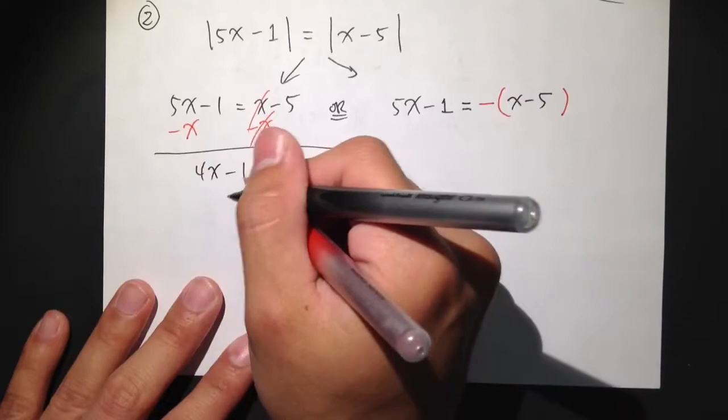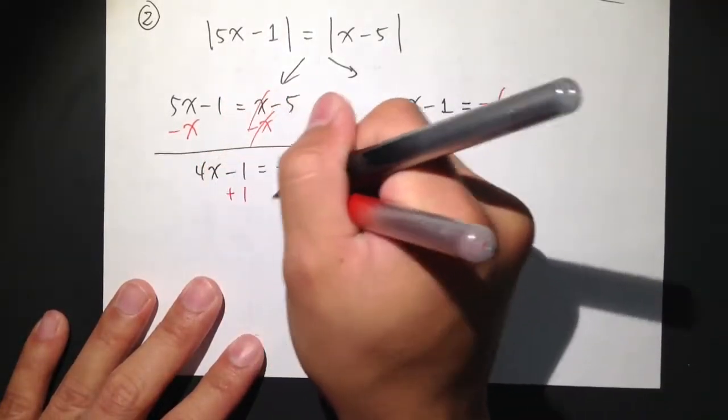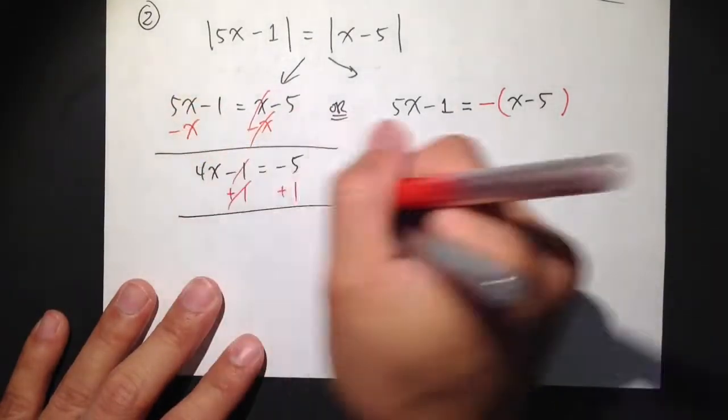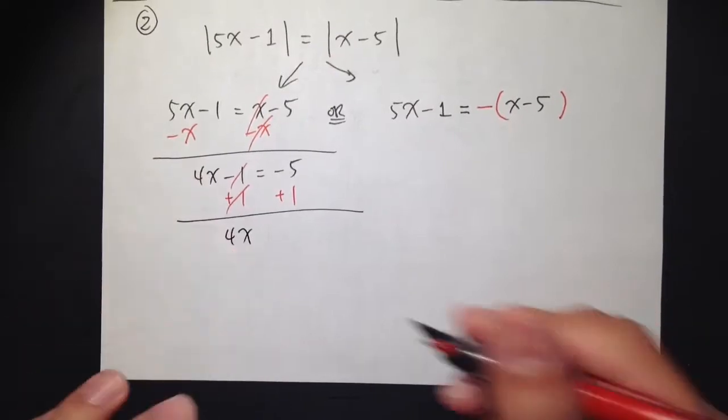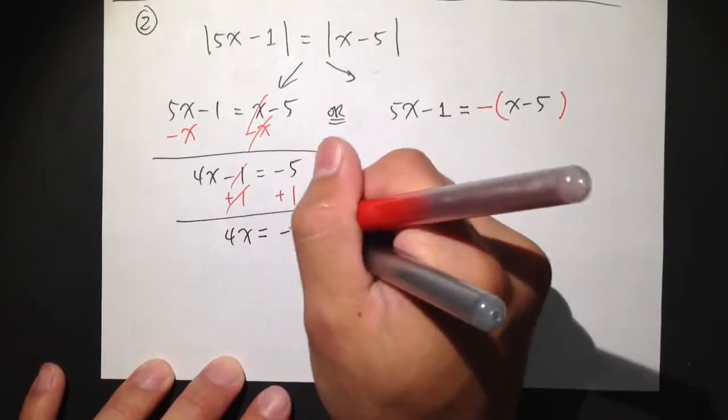Then here, at 4x minus 1 is equal to negative 5, I can add 1 on both sides. And these two cancel out, I get 4x is equal to negative 5 plus 1, which is negative 4.